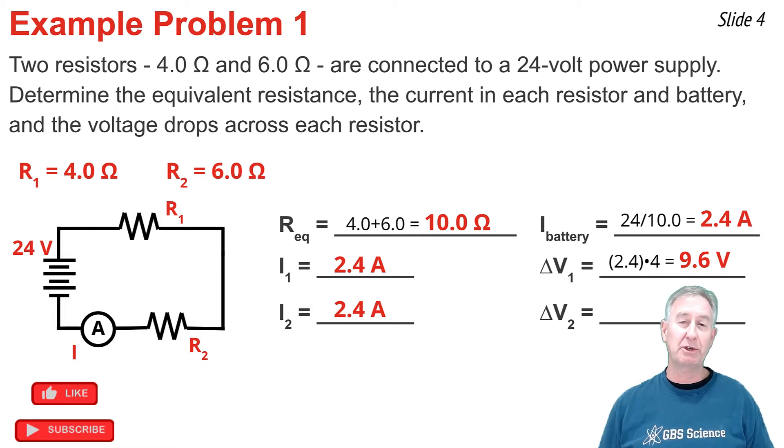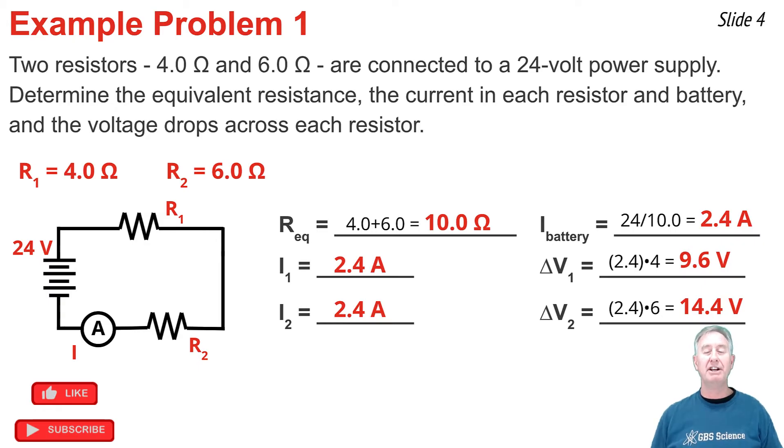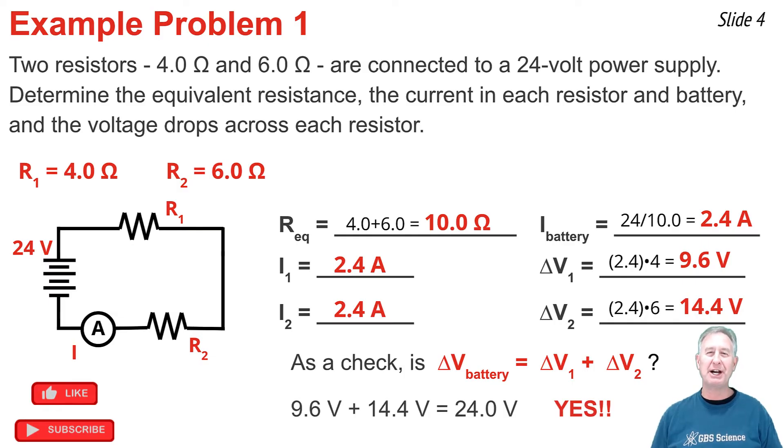And for resistor number two, that's 2.4 times 6, and that's 14.4 volts. As a final check, I'm going to ask if the sum of all the voltage drops is equal to the battery voltage. So 9.6 plus 14.4 adds to 24 volts. That's the battery voltage. I've done a good job.